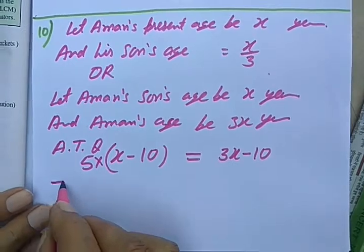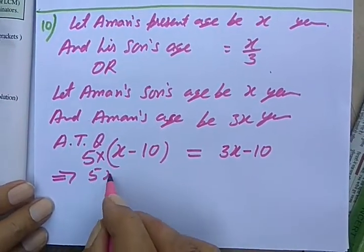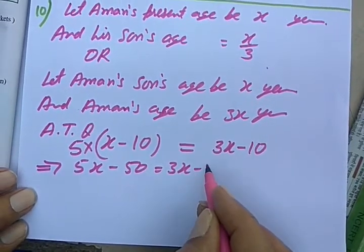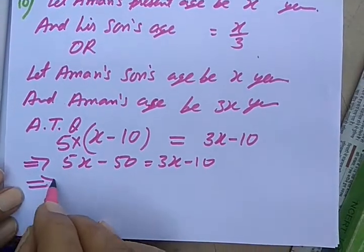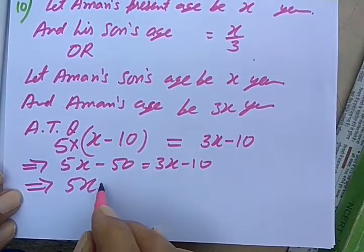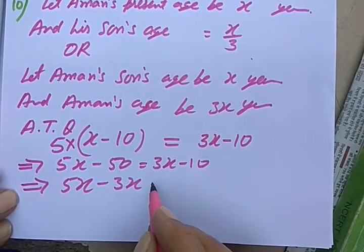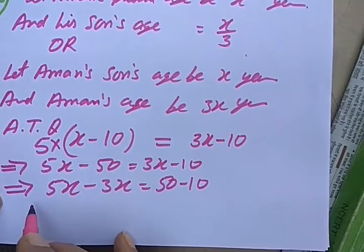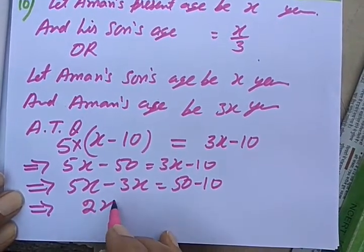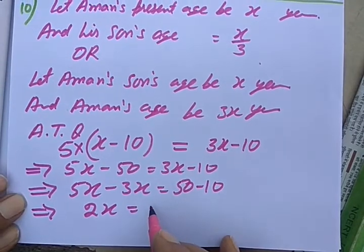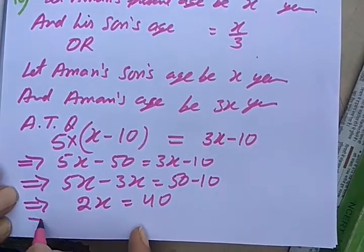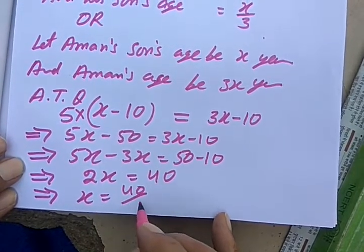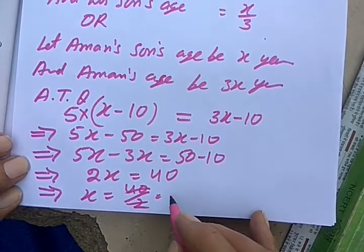This gives you 5X minus 50 is equal to 3X minus 10. This implies 5X minus 3X is equal to 50 minus 10. This implies 2X is equal to 40. This implies X is equal to 40 upon 2. That gives you 20.